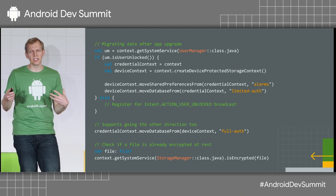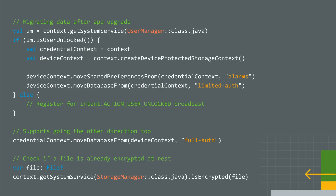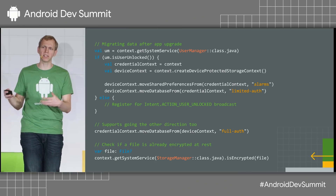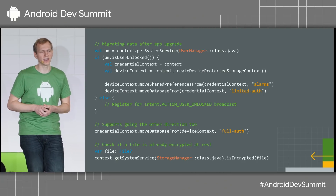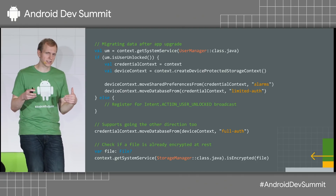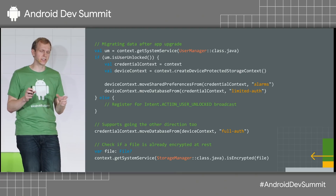One of the first things you'll need to do if you want to become direct boot aware is decide what data to keep in credential protected storage or migrate out to device protected storage. When starting your application, ask: is the user currently unlocked? The UserManager class lets you check isUserUnlocked. If unlocked, you have access to both device and credential storage.